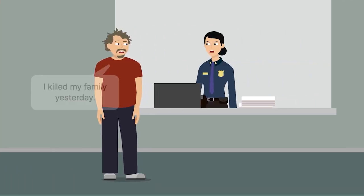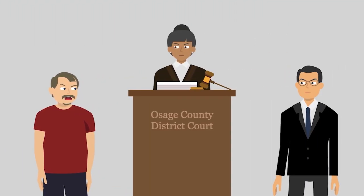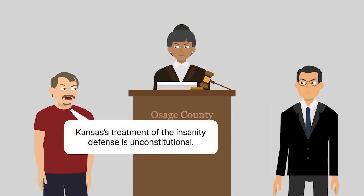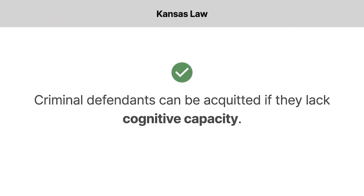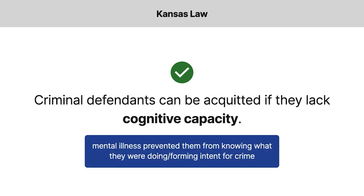The next day, Kaler turned himself in to the police to face capital murder charges. At trial in Kansas State Court, he challenged the constitutionality of Kansas' treatment of the insanity defense. Under recently modified Kansas law, criminal defendants could be acquitted if they lacked cognitive capacity, meaning that their mental illness prevented them from knowing what they were doing or forming the necessary intent for the crime in question.